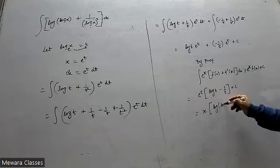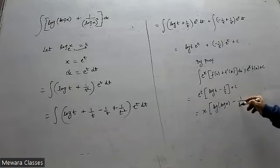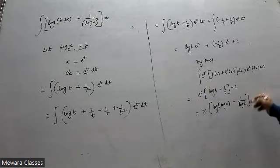Value of t is log x. So we get x times log of log x minus 1 upon log x plus c.